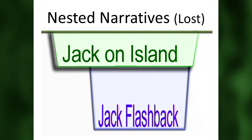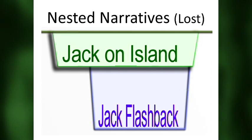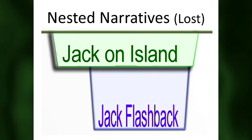Take Lost. In every episode a main character is involved in two different places in time — the narrative jumps back and forth between a present narrative and a relevant flashback, flash forward, flash sideways, or whatever, and the two narratives echo each other in interesting ways. This is different from a simple A-plot and B-plot.